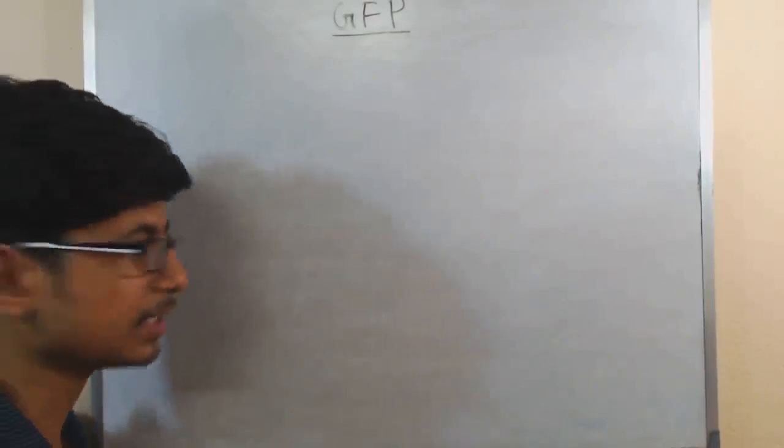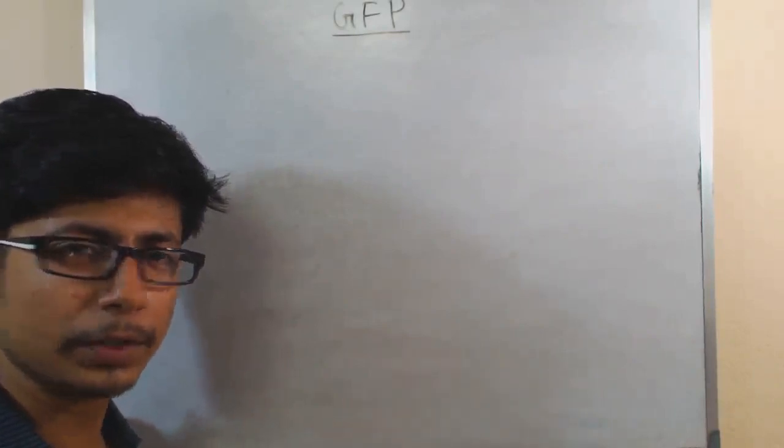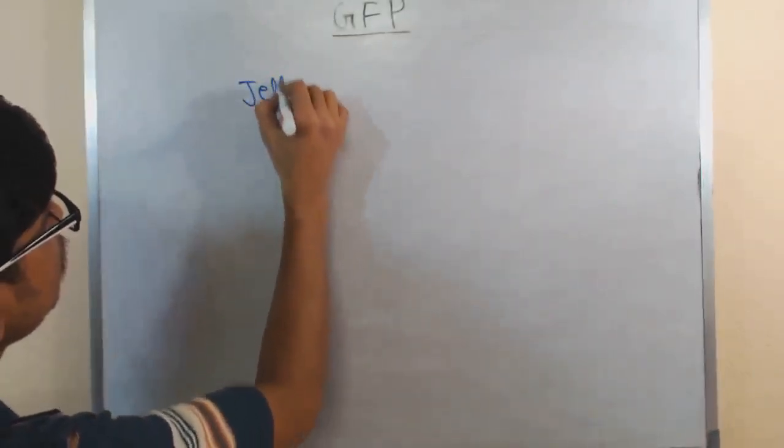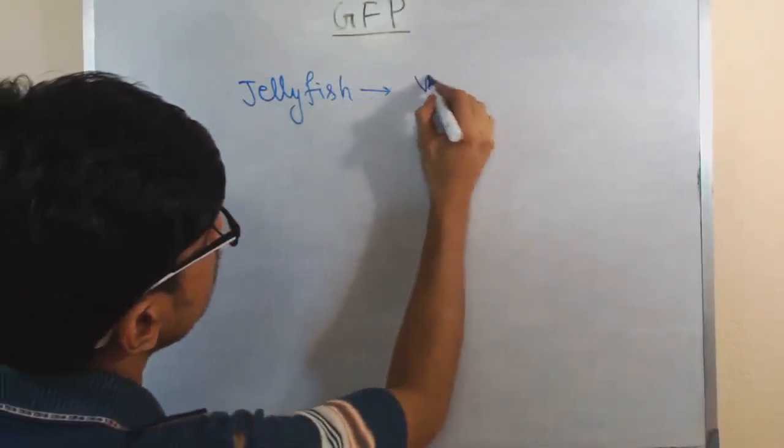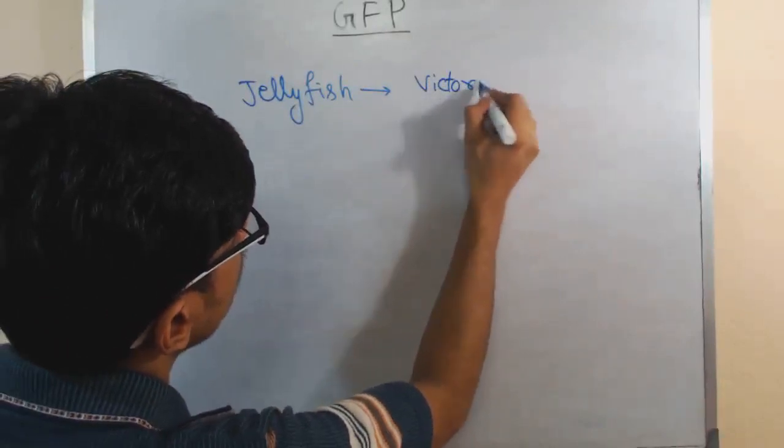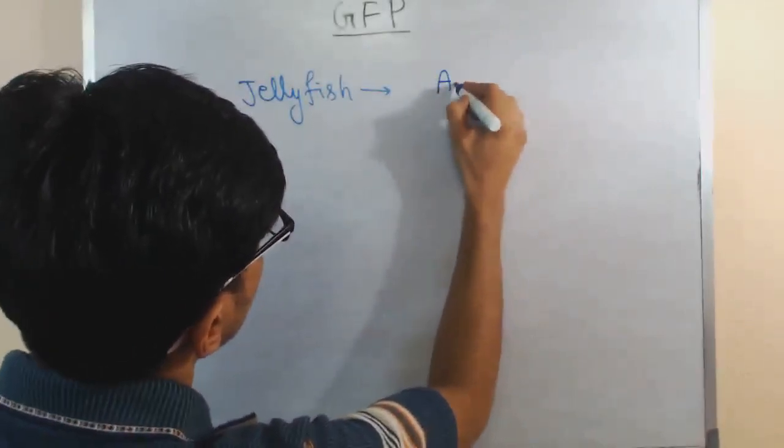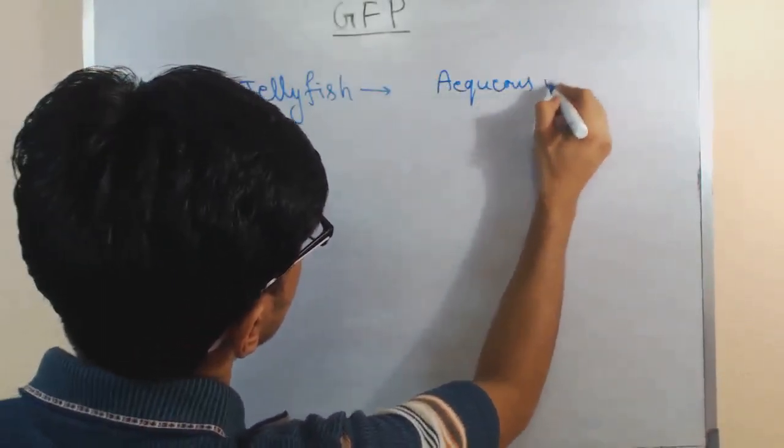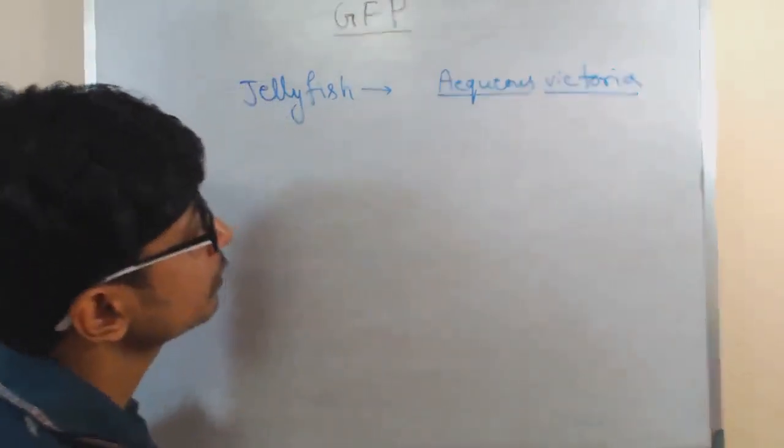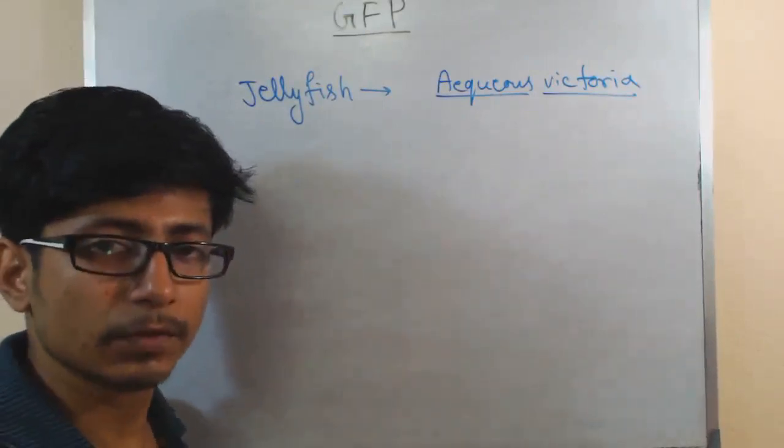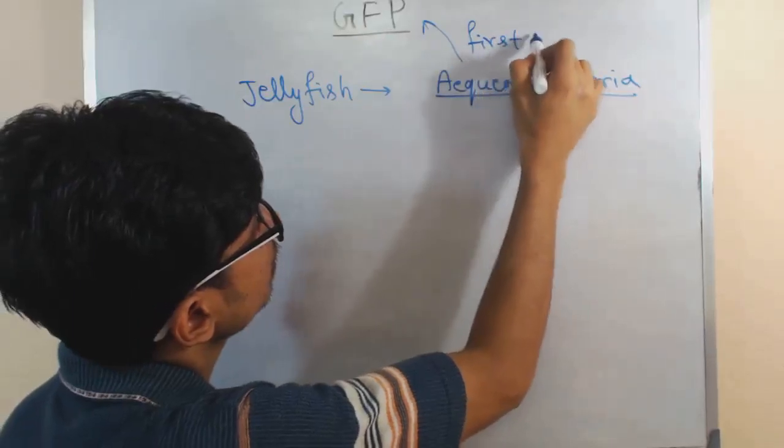It was first discovered in a jellyfish. You know, jellyfish can glow in light, beautiful pictures you can see online. The jellyfish that was discovered is Aequorea Victoria. Aequorea Victoria is the name of the jellyfish from where this GFP protein was first extracted.